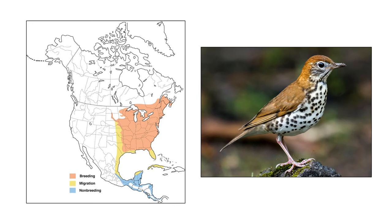The wood thrush is a migratory species, and this map shows its migration route throughout the year. It travels from the pink area, migrates through the yellow area, and down to the blue area in Mexico and Latin America. This organism has the potential to disperse seeds if it consumes them in the pink area, and then passes the seeds as it travels, showing how seeds can be moved from place to place.